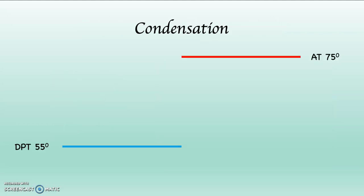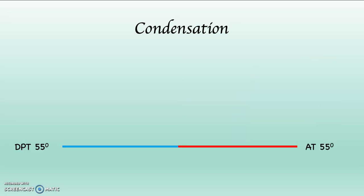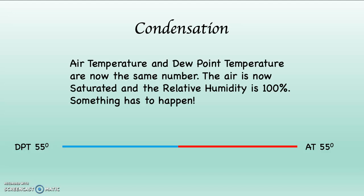I want to point this out to you. If the dew point temperature is on the left-hand side, represented by the blue line, and it's 55 degrees, and the air temperature is on the right-hand side, represented by the red line, and it's 75 degrees — if the air temperature begins to drop: 75, then 70, then 65, then 60 — at that point, air temperature and dew point temperature are the same number. The air is saturated, the relative humidity is 100%, and something is going to happen.